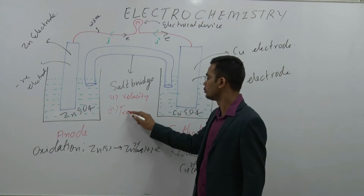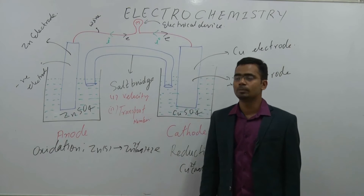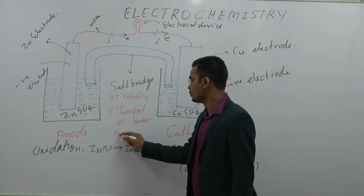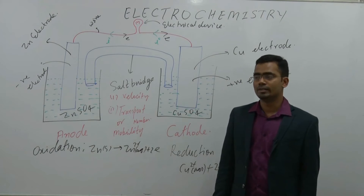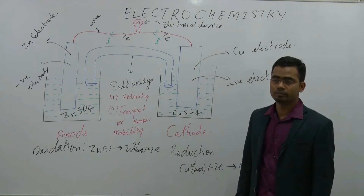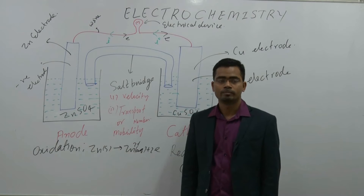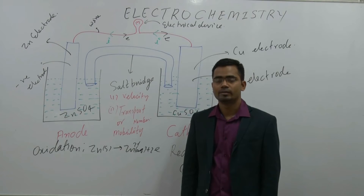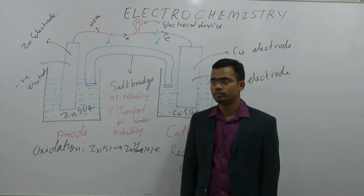The electrolyte must have the same transport number, or you can say the same mobility. The transport number is the fraction of total charge carried by an ion. The fraction of total charge carried by an ion is called the transport number of that ion.